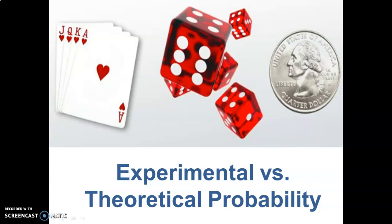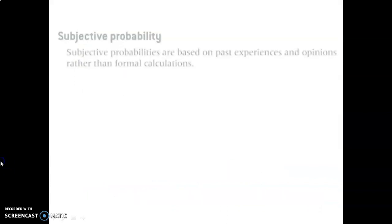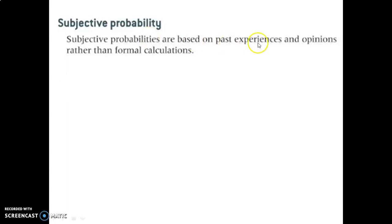Welcome to your lesson on experimental versus theoretical probability. Let's begin with subjective probability. These are probabilities that are based on past experiences and opinions, rather than formal calculations.